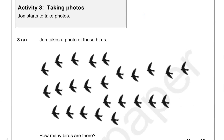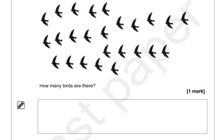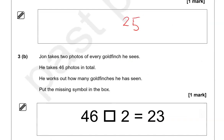Activity 3, taking photos. John starts to take photos. John takes a photo of these birds. How many birds are there? So we've got 1, 2, 3, 4, 5, 6, 7, 8, 9, 10, 11, 12, 13, 14, 15, 16, 17, 18, 19, 20, 21, 22, 23, 24, 25. So 25 birds.